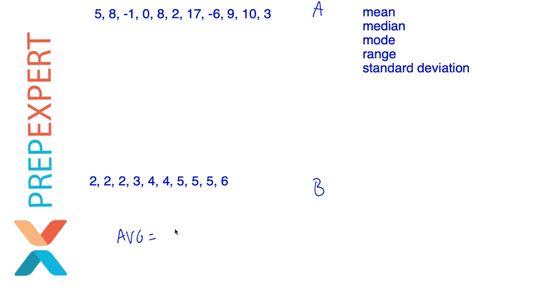What is the mean? It's just the average, which is the sum over the number of numbers. So for data set B, what is that? Let's see. The sum is two plus two plus two plus three plus four plus four plus five plus five plus five plus six. How many values are there in this data set? One, two, three, four, five, six, seven, eight, nine, 10.